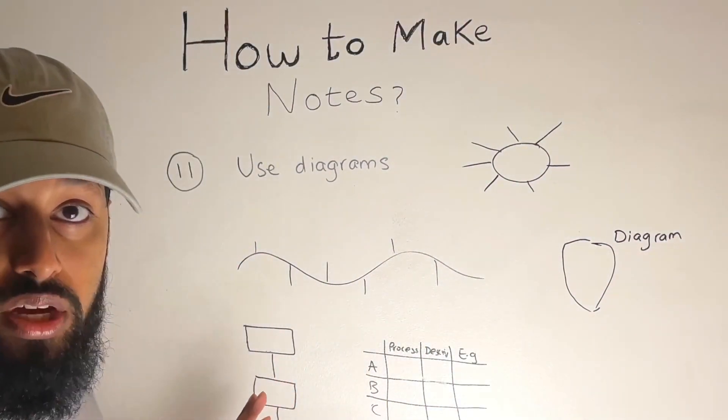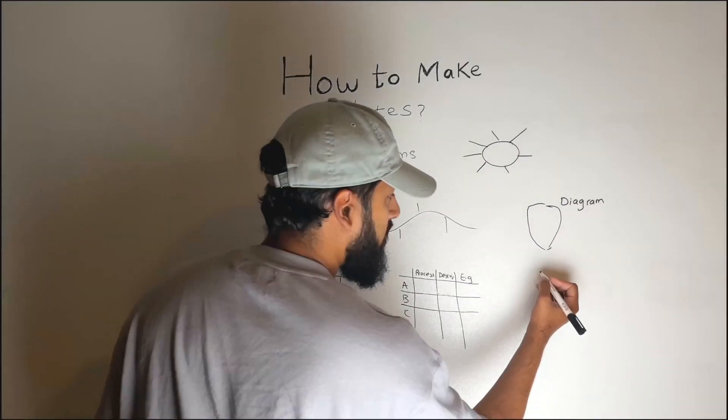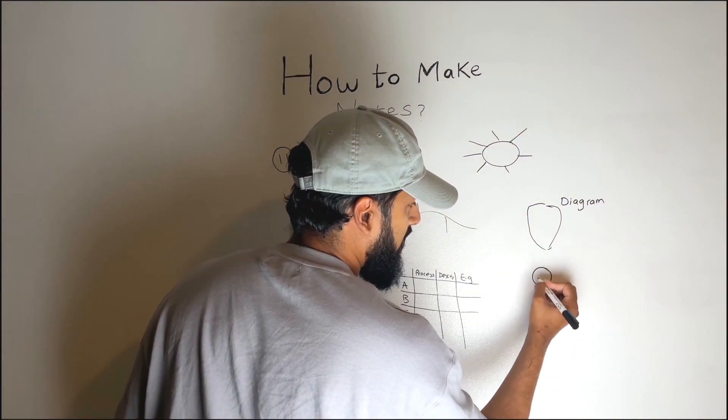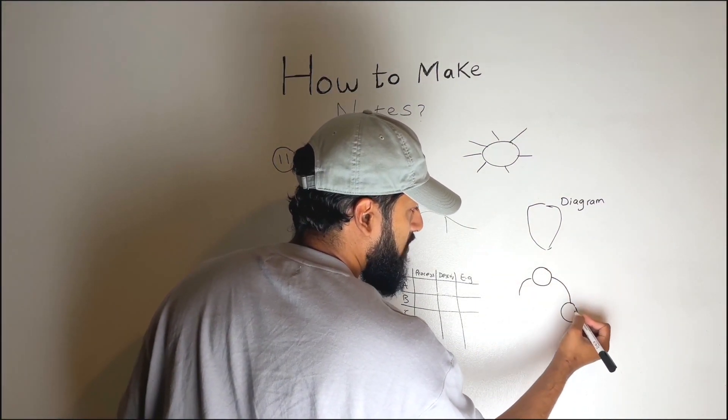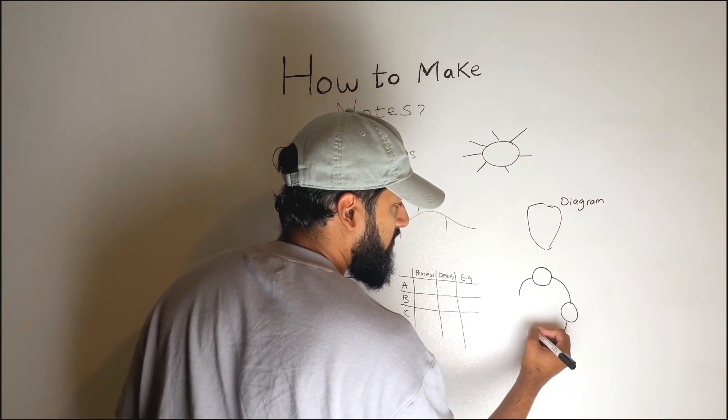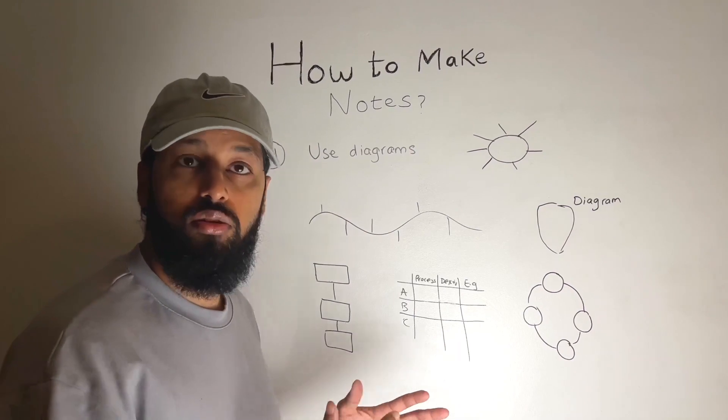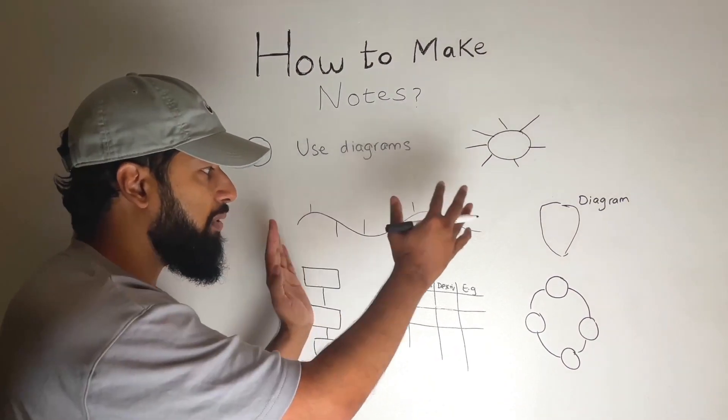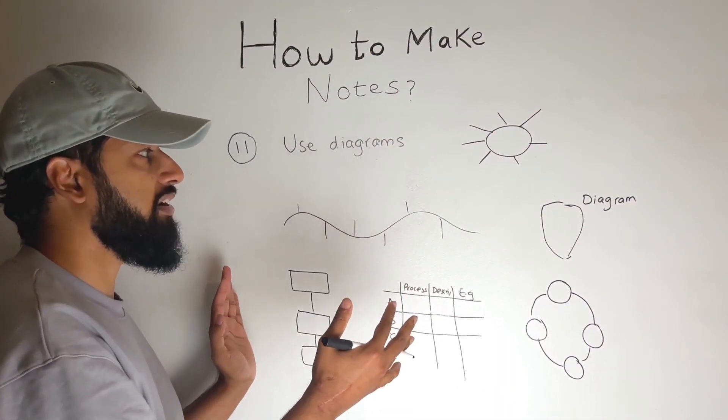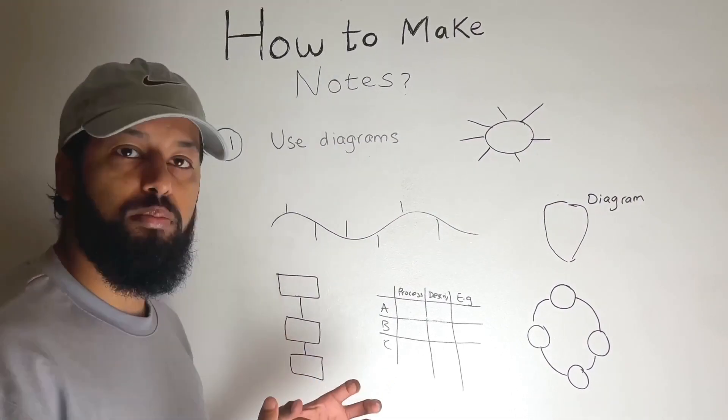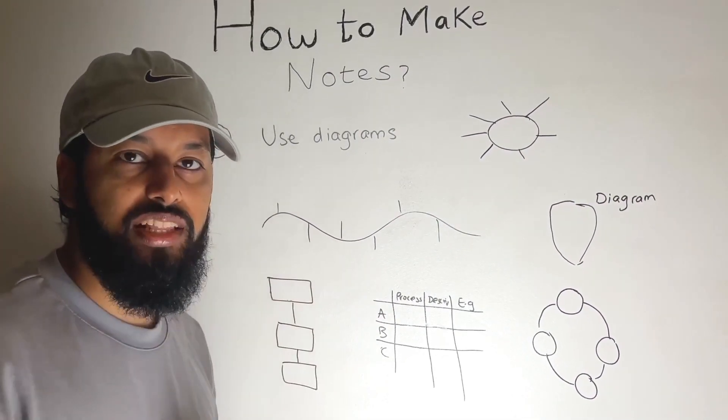Another example is like a life cycle diagram. So now you might be studying recycling or something and you may want to draw a life cycle diagram. You have many more like pie charts and bar charts and all of this kind of stuff. So wherever possible try to stick diagrams in because they will really break up the flow and really help you retain that piece of information.